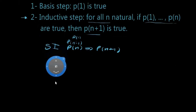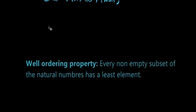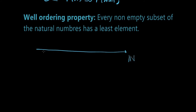Another definition is the well-ordering principle. Every non-empty subset of the natural numbers has a least element. This is pretty obvious if you think about it — on the natural numbers 1, 2, 3 and so on, if I take any subset, there will always be a least element.